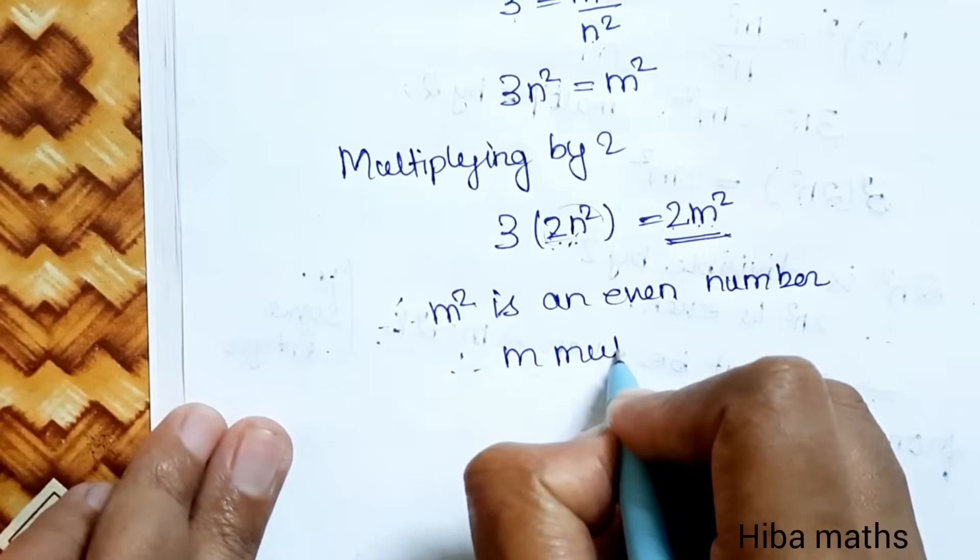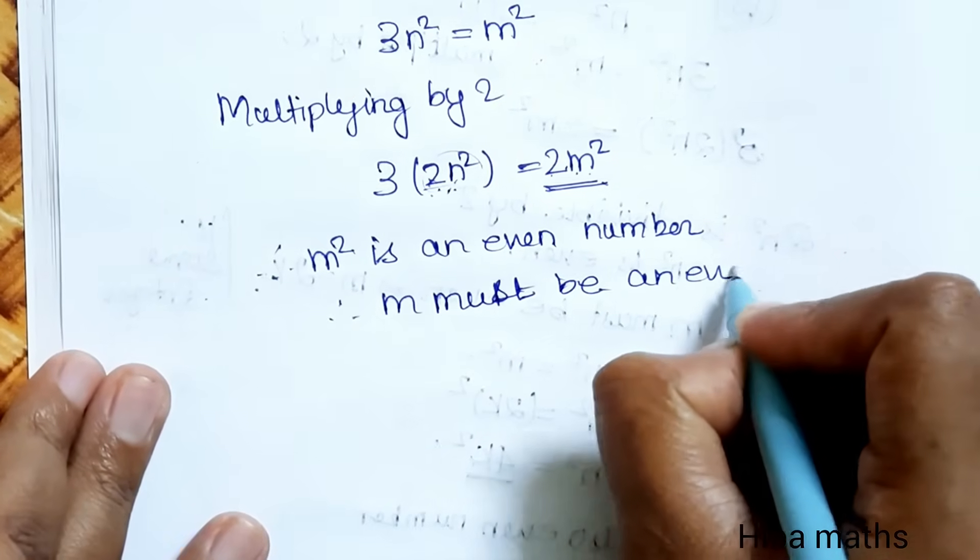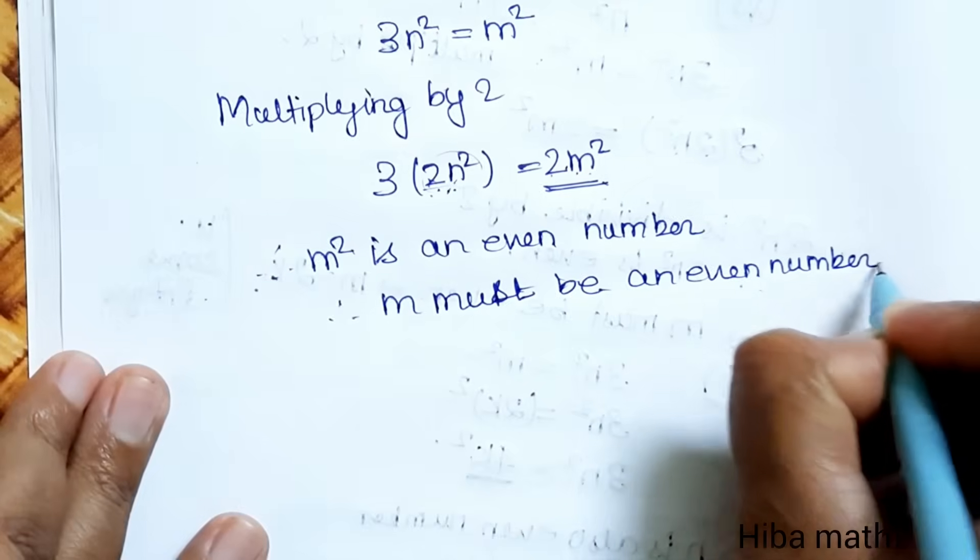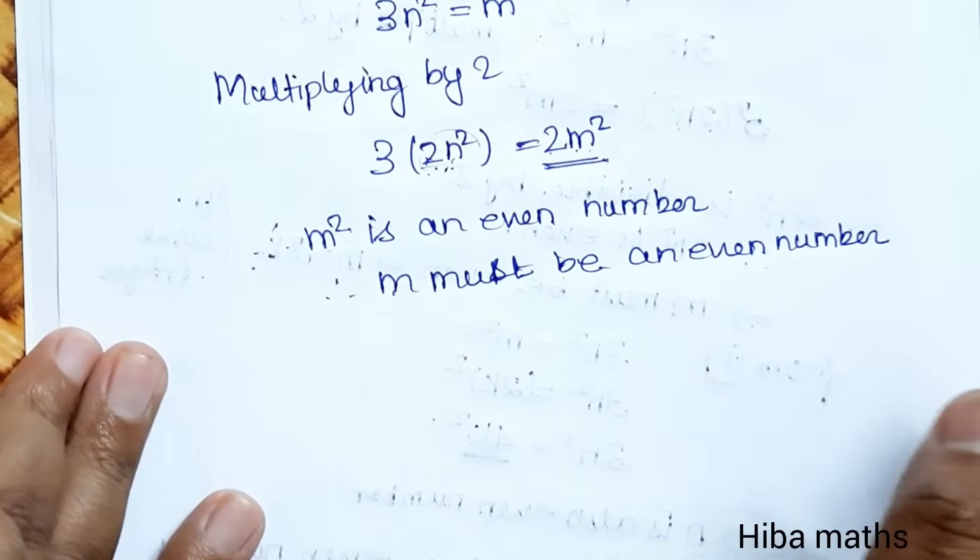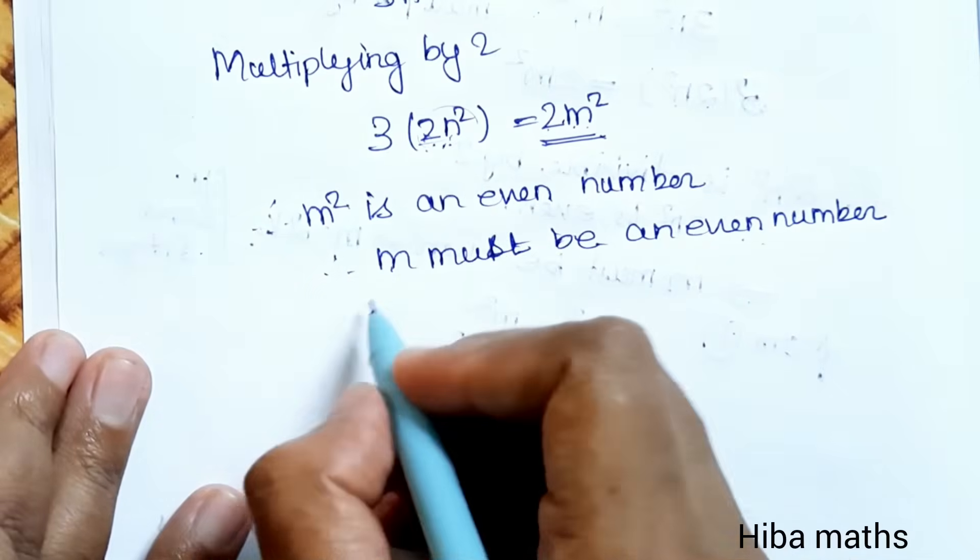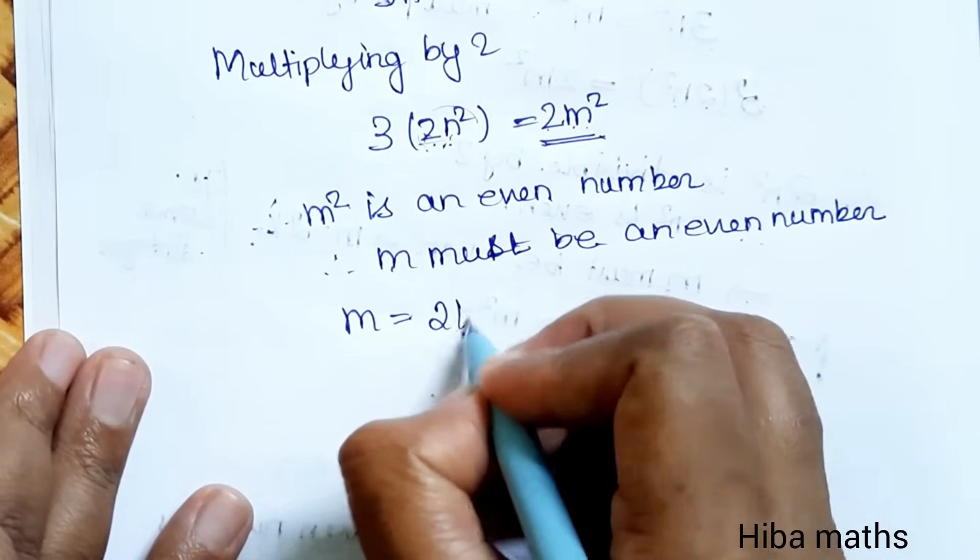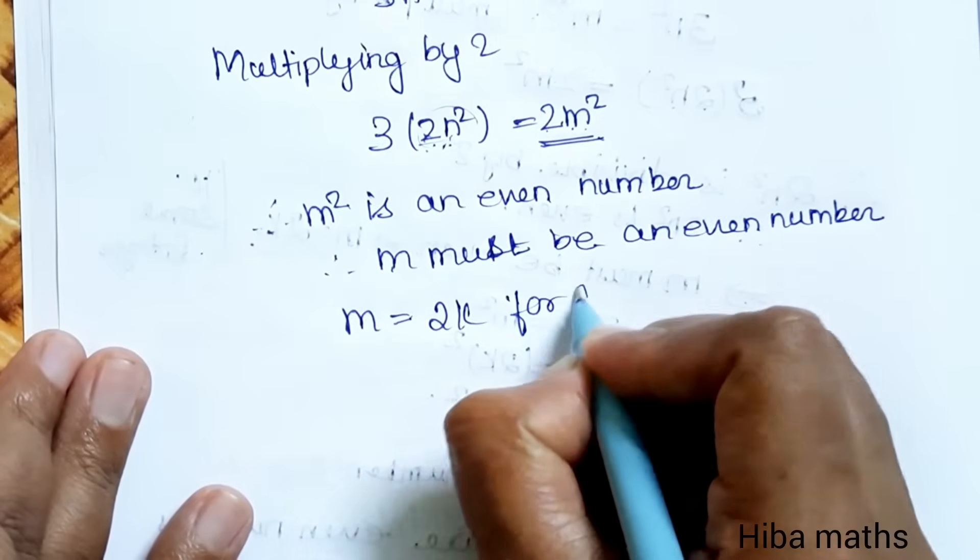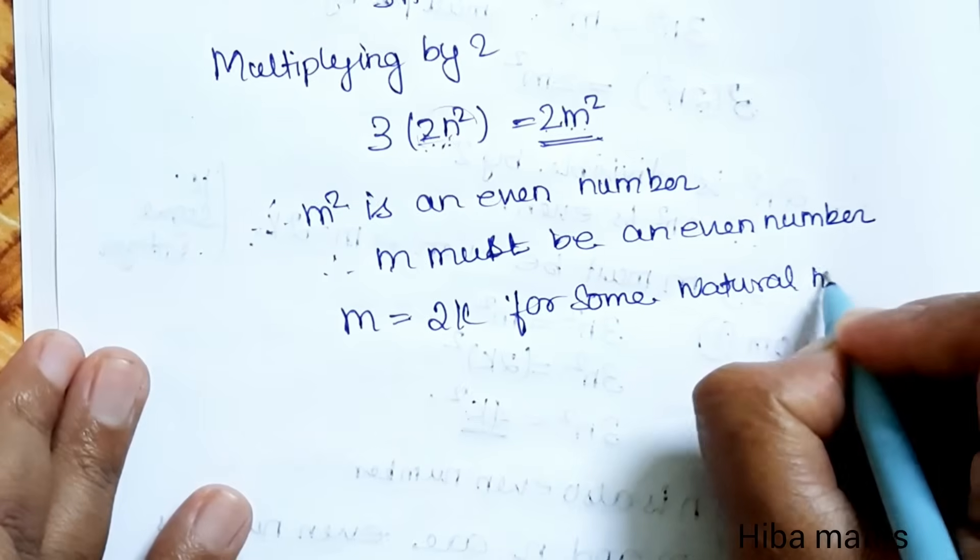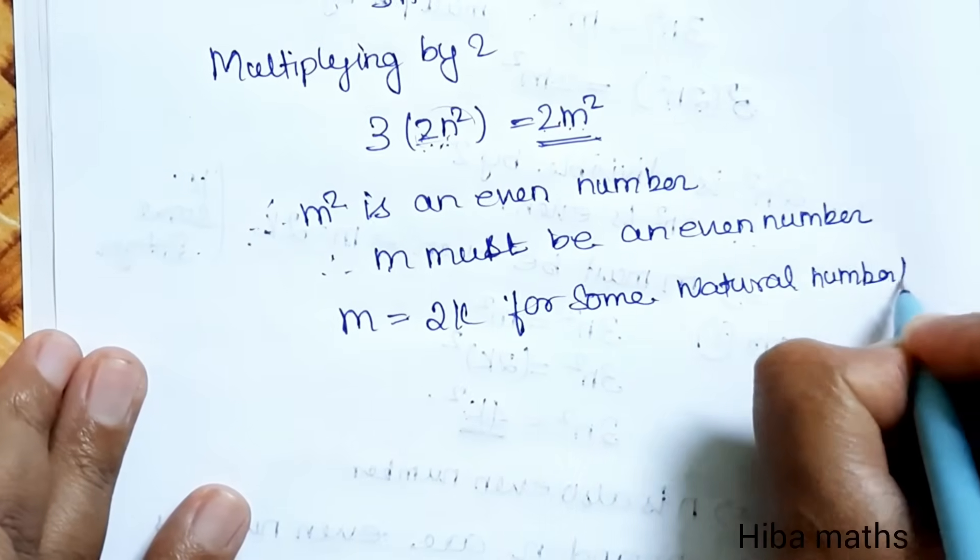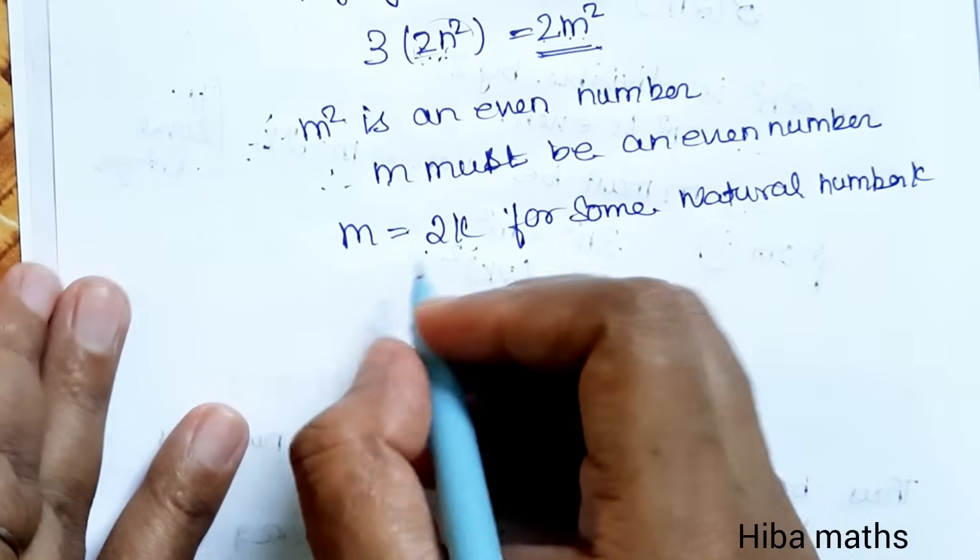M must be an even number. We will solve the theorem. Now, M is equal to 2 into K for some natural number.